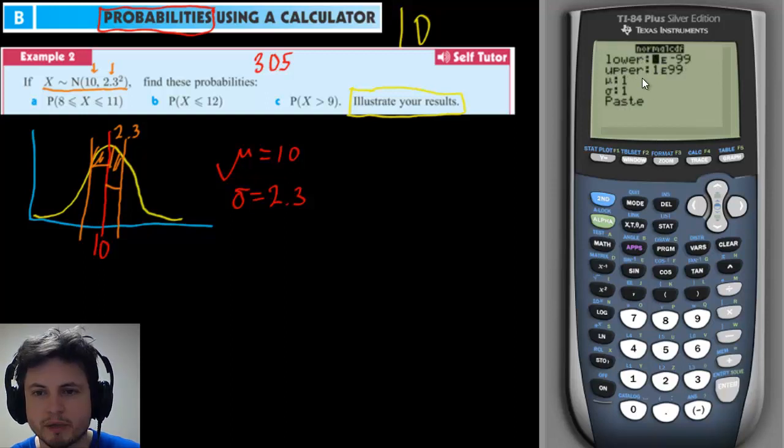And what you do is you click on second and right above it says distribution. So you click on VARS and you get this particular list and what you need is number two normal CDF. Normal CDF might look like this or might not look like this. It depends on the calculator you use.